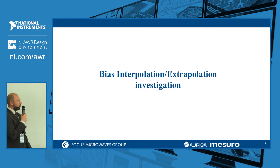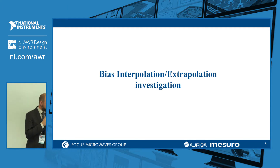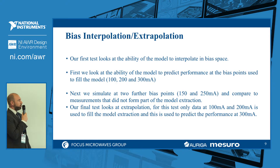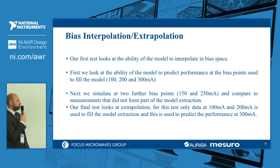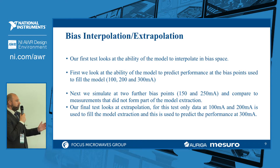Let's move to the examples of bias interpolation and extrapolation. The first test looks at the model's ability to interpolate in bias space, first verifying performance at the bias points used to fill the model: 100, 200, and 300 milliamps. Then we simulate two further bias points — 150 and 250 milliamps — comparing to measured data not part of the model. Finally, for extrapolation, the model is generated only from 100 and 200 milliamp data, and we simulate the 300 milliamp bias point.